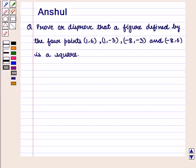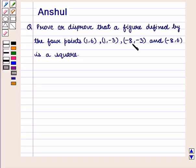Hello and welcome to the session. In this session, we are going to discuss the following question: Prove or disprove that a figure defined by the four points (1, 6), (1, -3), (-8, -3), and (-8, 6) is a square. Let us start with the solution of the given question.